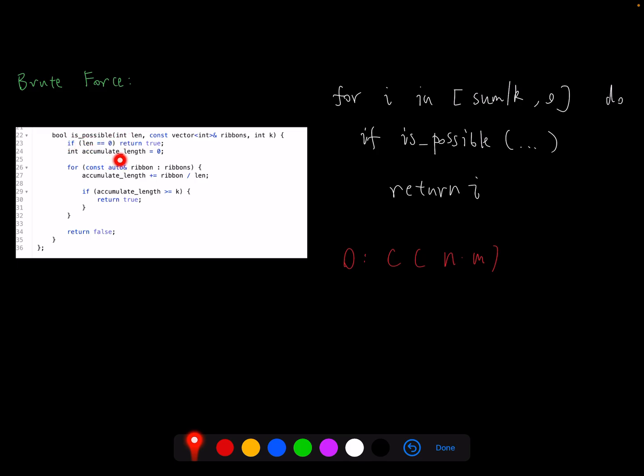We accumulate the length for each ribbon's cut. Then for each ribbon, we try to cut ribbons in the length, so that we just add those parts into the accumulated length. As long as we get the equivalent length greater or equal to k, which means the length is qualified, we return true.